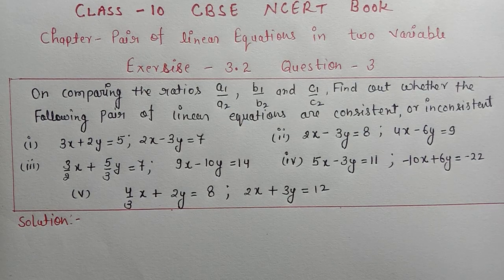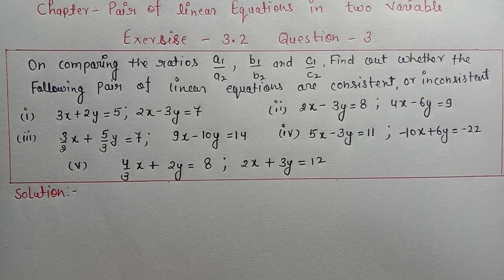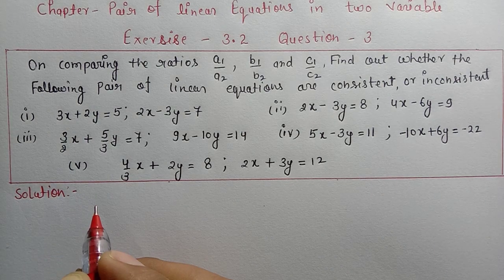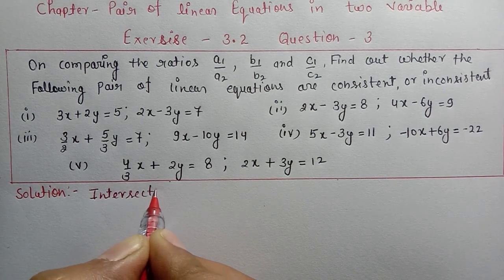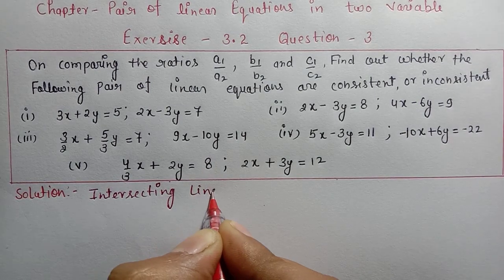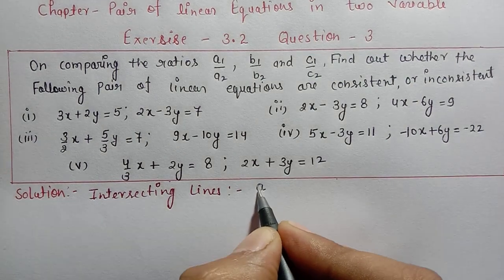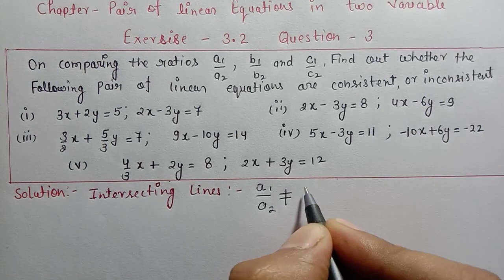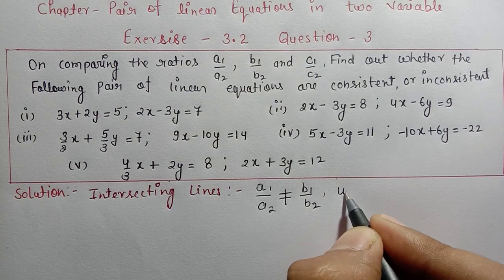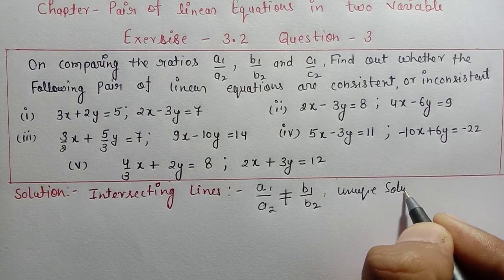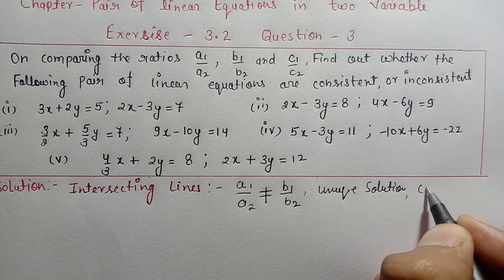We need to find out whether the following pairs of linear equations are consistent or inconsistent. I explained this in the previous video too, but I'll repeat it here. There are three types of lines. First: intersecting lines. In this case, a1/a2 is not equal to b1/b2. Here you get a unique solution, so this type of lines is called consistent.